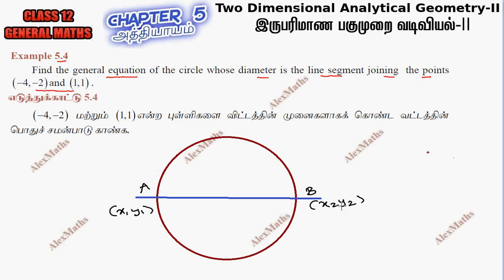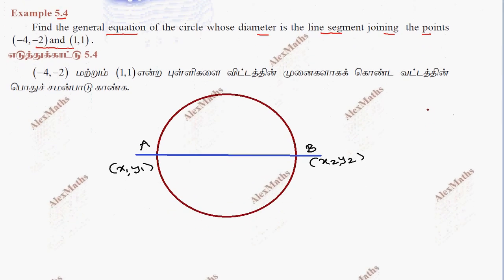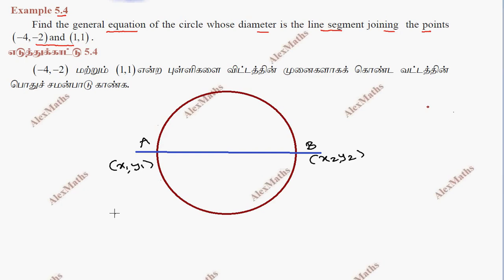So in the equation of the circle, we know that formula: equation of circle is (x minus x1) into (x minus x2) plus (y minus y1) into (y minus y2) equal to 0.